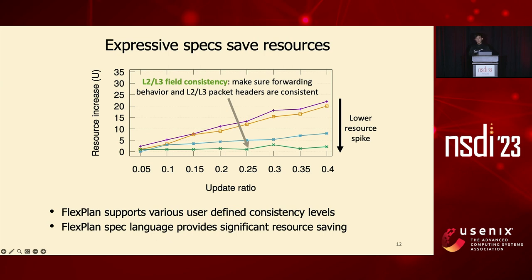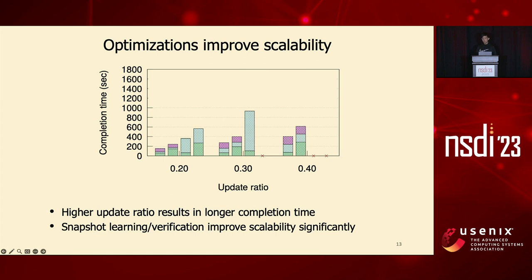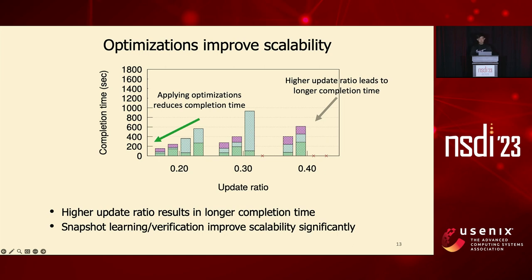For example, the green curve at the bottom, with the lowest resource spike, represents what we call L2/L3 field consistency, which only ensures that L2/L3 packet header fields are consistent during the update. This is weaker than some other consistency levels, but still helpful and gives a great resource reduction. Regarding scalability versus optimizations: with higher update ratios, computation times grow longer, confirming real scalability challenges. But within each group, applying more and more optimizations progressively reduces computation time, showing that our optimizations directly improve FastPlan's performance.